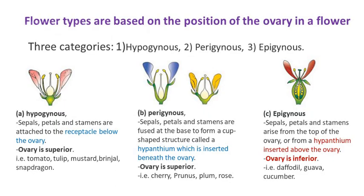Three types of flowers can be found based on the position of the ovary. In hypogynous flowers, sepals, petals and stamens are attached to the receptacle below the ovary, so the ovary is superior — tomato, tulip, mustard, brinjal and snapdragon are good examples. In perigynous flowers, sepals, petals and stamens are fused at the base to form a cup-shaped structure called a hypanthium inserted beneath the ovary, so the ovary is superior — cherry, prunus, plum and rose are examples. In epigynous flowers, sepals, petals and stamens arise from the top of the ovary or from a hypanthium inserted above the ovary, so the ovary is inferior — daffodil, guava and cucumber are examples.